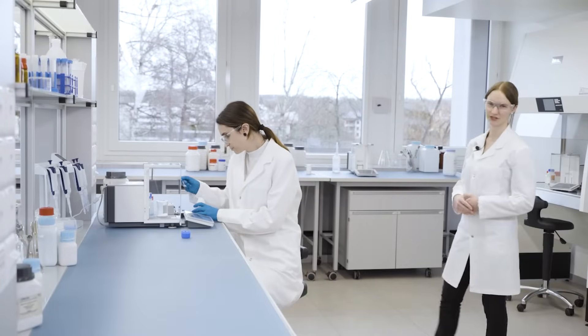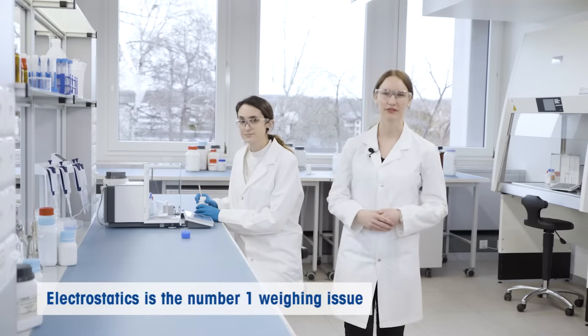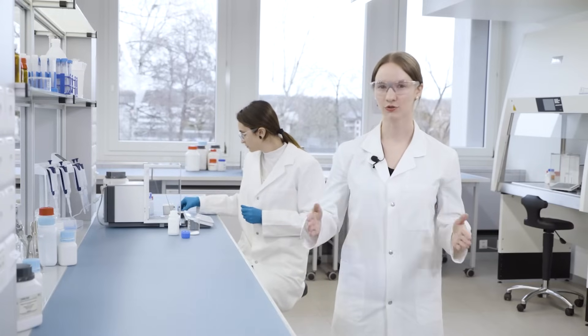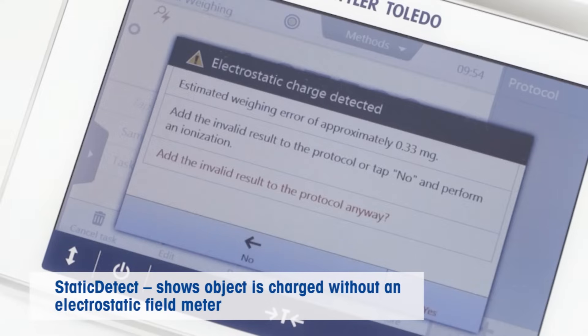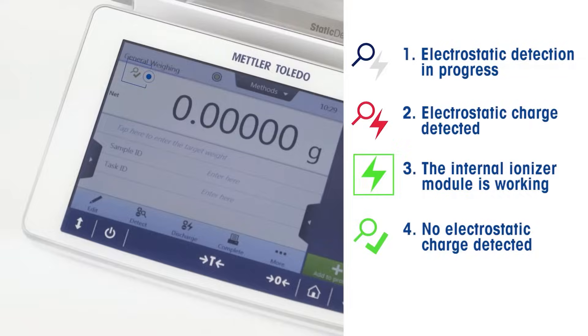Drafts and temperature differences are not the only disturbance when weighing. Electrostatics actually have the largest impact. The XPR's patented anti-static solution puts a stop to this. Not only does it detect charges and indicate the measurement uncertainty resulting from it, an optional ionizer module that can easily be inserted in the back of the weighing chamber immediately and automatically eliminates charges on your sample vessel and gloves to assure accuracy of your result.